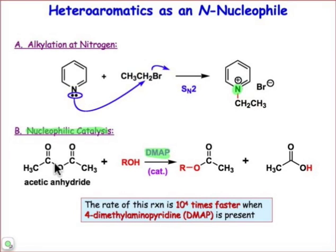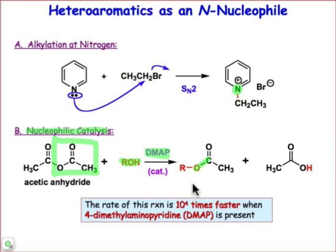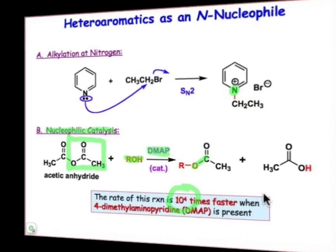The way that it gets involved is to do things like substitution reactions on carbonyls — where, for example, in the case of acetic anhydride, that acetate group is substituted for by the alcohol. We've done a displacement — a replacement, really — of one group with another, and it's facilitated by DMAP. DMAP, as you can see, is a very potent nucleophilic catalyst, approximately 10,000 times faster when dimethylaminopyridine is present than when it's absent.